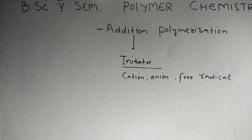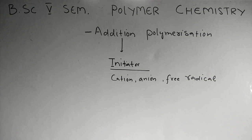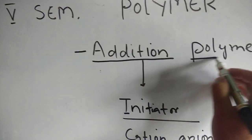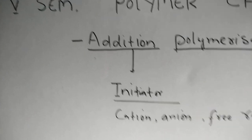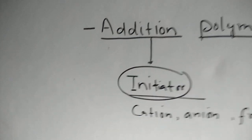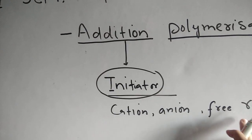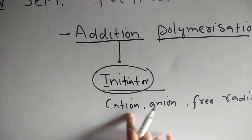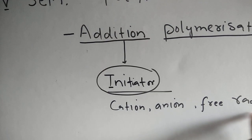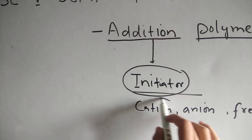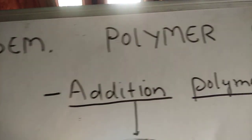We'll be dealing with polymer chemistry and today's topic will be addition polymerization. Addition polymerization is basically polymerization which takes place with the help of an initiator. That initiator is a chemical species — it can be either a cation, an anion, or a free radical. Based on which type of initiator you use, it is called cationic, anionic, or free radical polymerization. Today we'll be dealing with cationic polymerization.